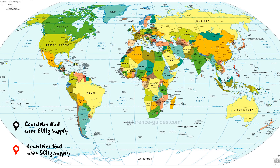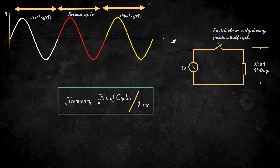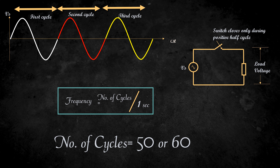Do you know different countries use different frequencies? Yes. Countries like India, China, Russia, Japan, Indonesia, Australia, and South Africa use 50 Hz frequency. While other countries like Canada, United States, Mexico, Brazil, and South Korea use 60 Hz frequency. There are approximately 40 countries that use 60 Hz while the rest typically run on 50 Hz. That means in one second, we'll have 50 or 60 cycles depending on which country we are from, which also means the single cycle is repeated continuously 50 times in one second.